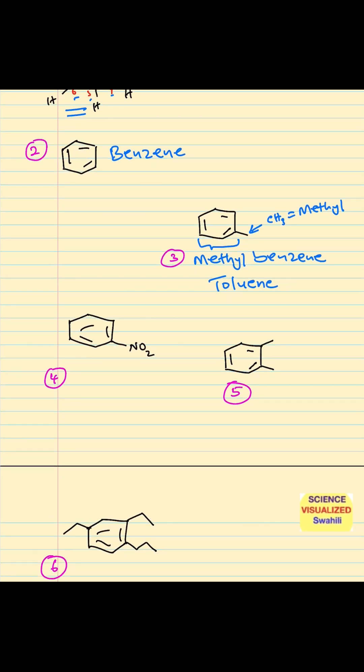The next one — now you have an NO2 side group and that's called a nitro group. So the structure is now nitrobenzene.